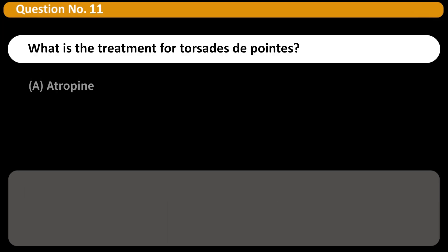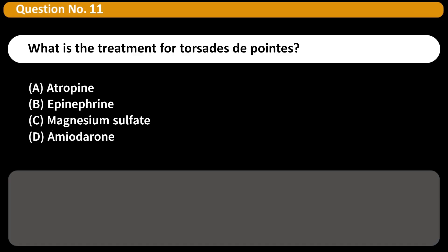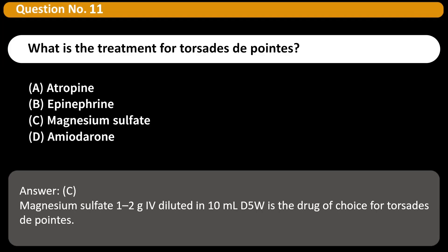What is the treatment for torsades de pointes? A. Atropine. B. Epinephrine. C. Magnesium sulfate. D. Amiodarone. Answer: C. Magnesium sulfate 1 to 2g IV diluted in 10 milliliters D5W is the drug of choice for torsades de pointes.